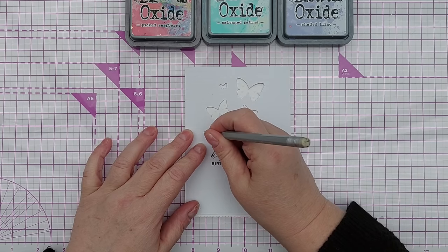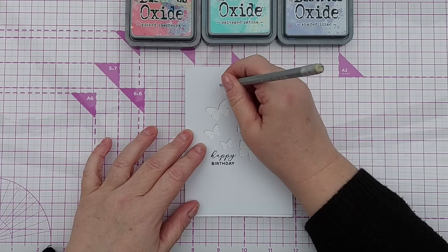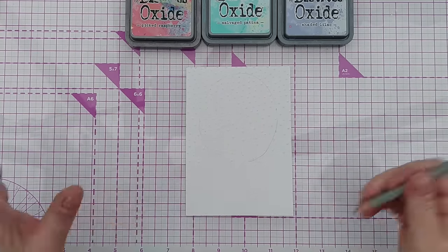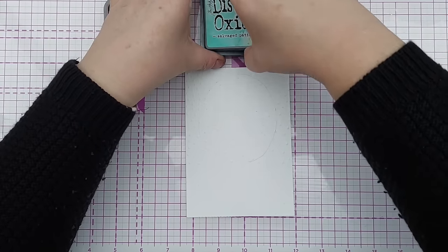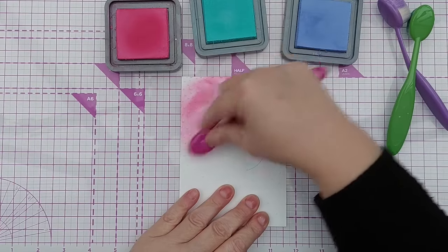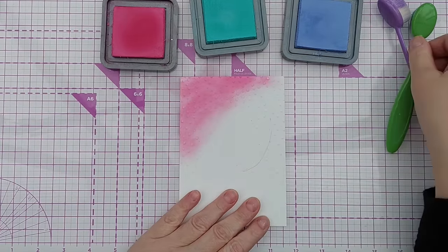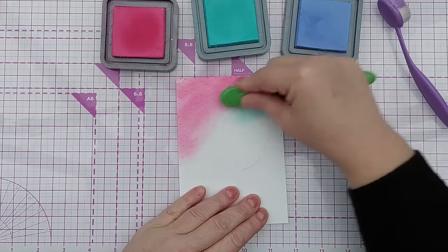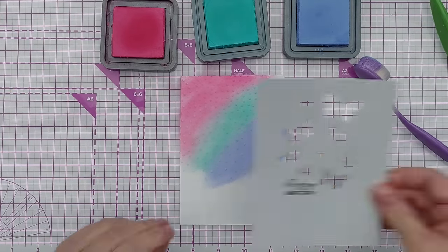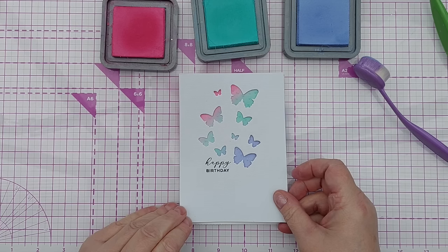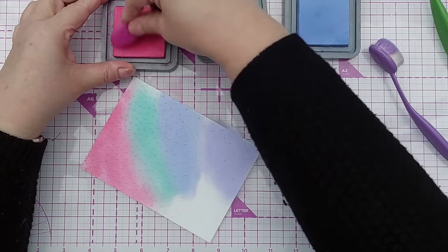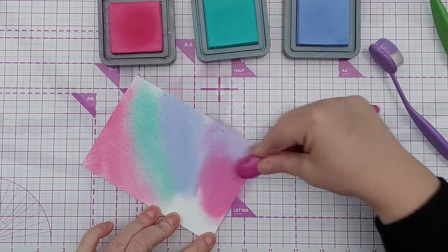So I've got some distress oxides here that I'm going to blend onto the panel. I just want to do some tiny little pencil marks just to indicate where I'm aiming for my most variation of color. So I've got picked raspberry, salvaged patina, shaded lilac and I'm just going to blend like this. Mix in my colors a bit and pop that over there and I get a bit of everything which is what I wanted. I'm also going to do a bit of blending down here because I need some to cut my focal point image from. I think with this one we'll just stick with the pink and purple.